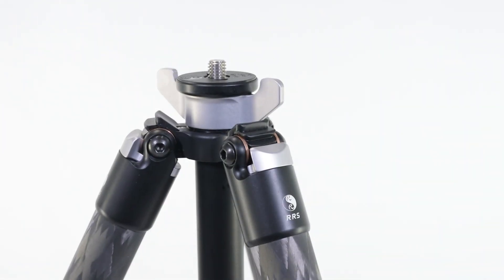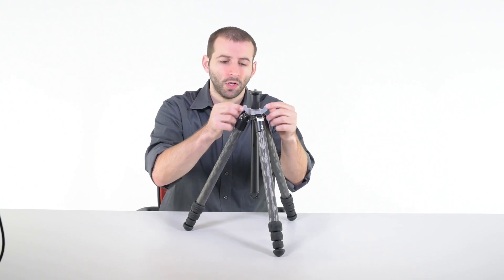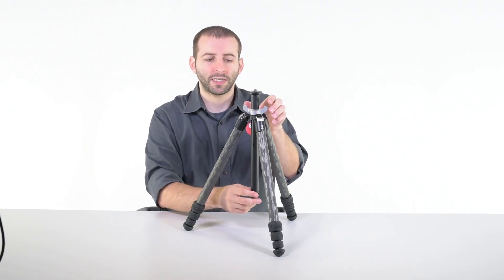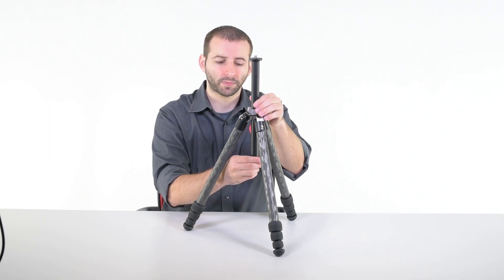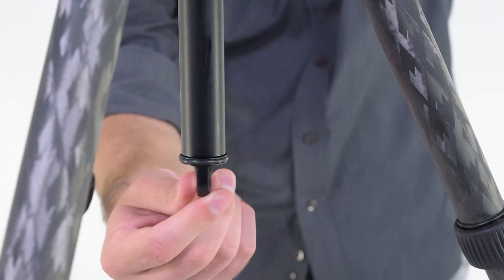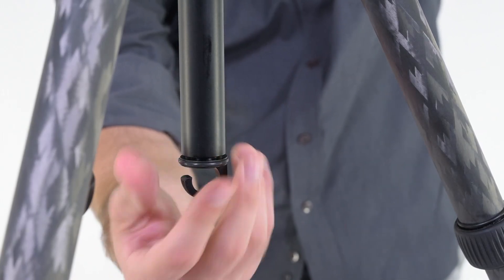The TQC14 is our only carbon fiber tripod that features an integrated quick column with a very intuitive and ergonomic wing nut style locking control. The quick column itself can be completely removed by loosening the weight hook at the bottom of the quick column.